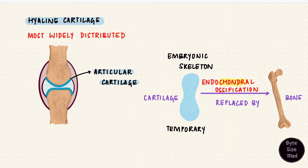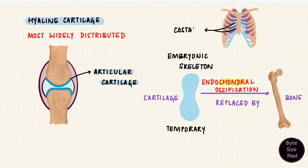But in some places, hyaline cartilage doesn't get replaced by bone, and it stays as hyaline cartilage for life. For example, the costal cartilage which attaches the ribs to the sternum. The upper respiratory tract can also have hyaline cartilage, like in the rings of the trachea.